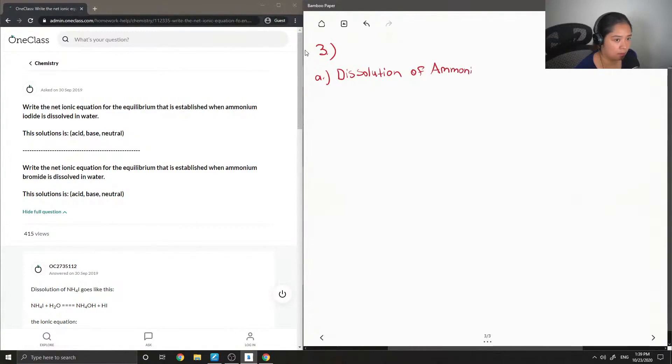Of ammonium iodide. Okay, so this is the chemical equation for ammonium iodide plus water.